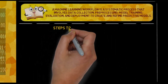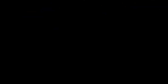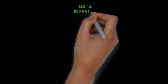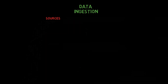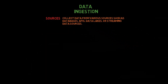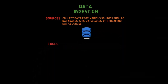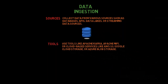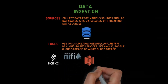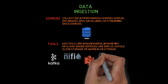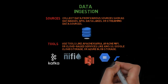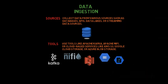Here are the steps to integrate an ML model. Step 1: Data ingestion. Sources: Collect data from various sources such as databases, APIs, data lakes, or streaming data sources. Tools: Use tools like Apache Kafka, Apache NiFi, or cloud-based services like AWS S3, Google Cloud Storage, or Azure Blob Storage.